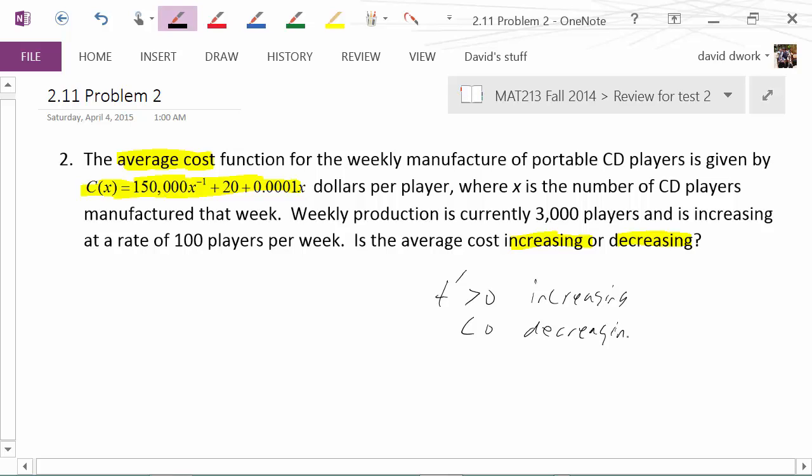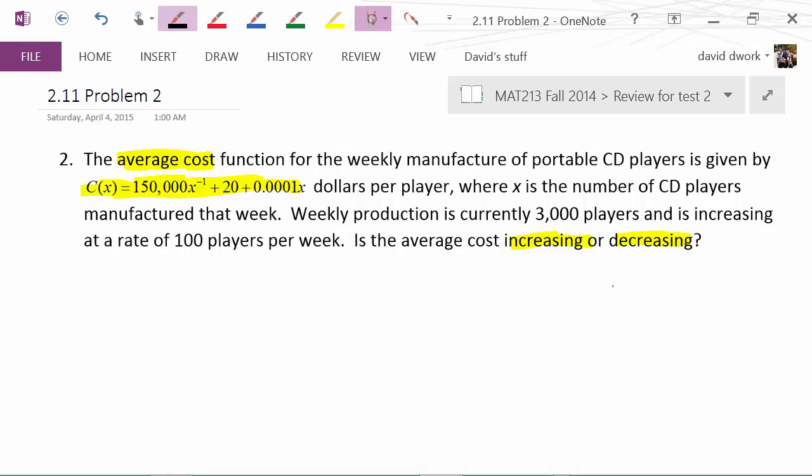So we can attack this by finding the derivative, but we need to talk about its derivative not with respect to the change in players. They're asking: is the average cost increasing or decreasing with respect to time? Because x is the number of CD players manufactured per week, and that's the key part, per week. So we're going to do a derivative with respect to time.